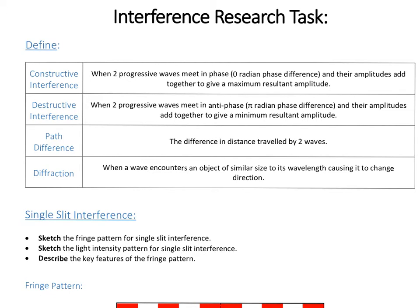A few key definitions that we need to know to start off with. Interference — you may well have met before if you've done the stationary waves topic previously. When we're dealing with optics, constructive interference is when two progressive waves meet in phase, so they have zero radians phase difference. Their amplitudes add together to give you a maximum result in amplitude when they meet.